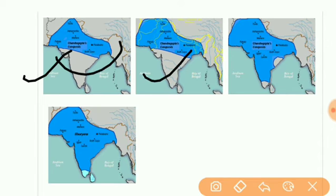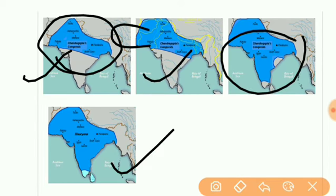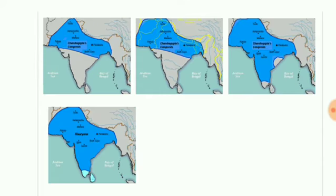First, the northern area came under the Mauryan Empire, then it expanded into the northwestern area, and eventually the whole of India came under the empire.